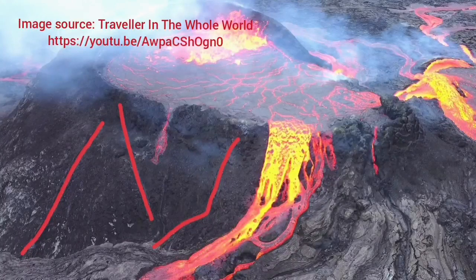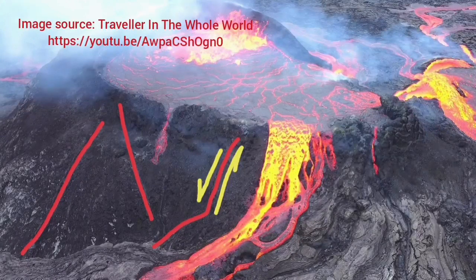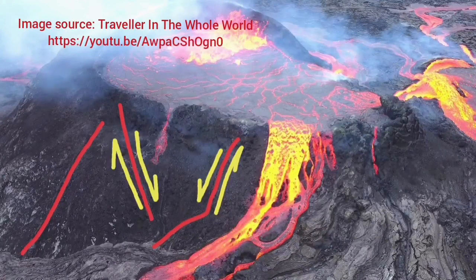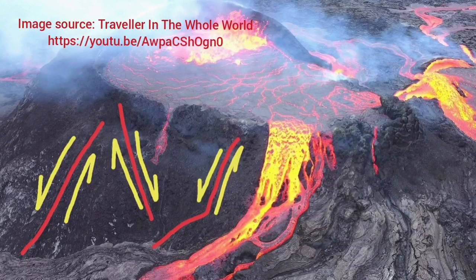These are fractures — blocks of rock shaped like triangles falling down. When something falls down and the adjacent bigger part doesn't move, that means it has practically moved up. So what you see here are fractures, weaknesses in the walls of the crater.